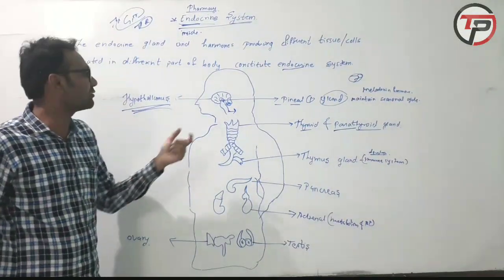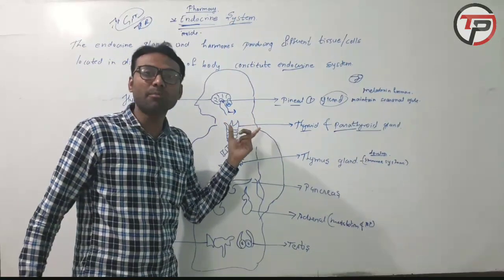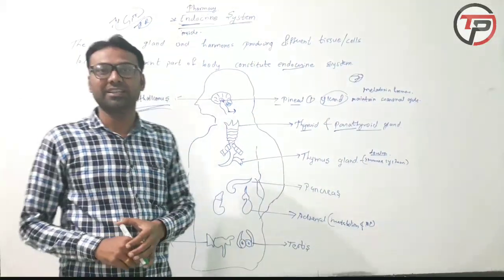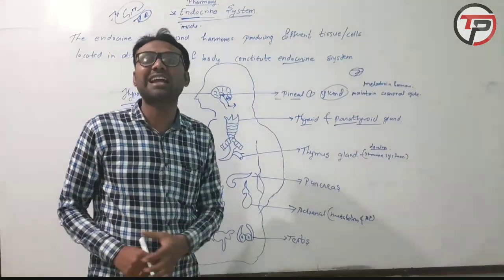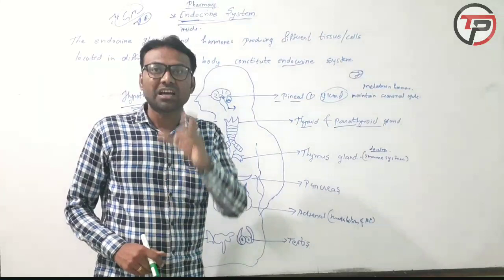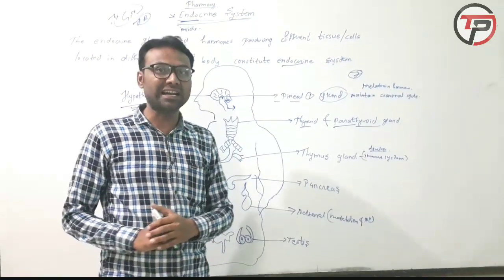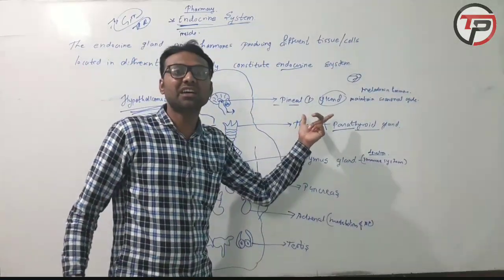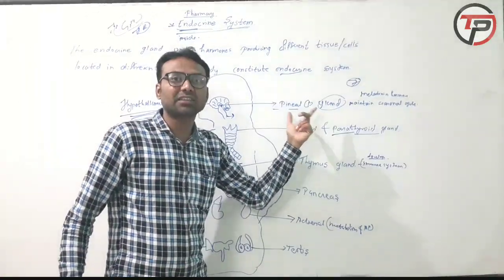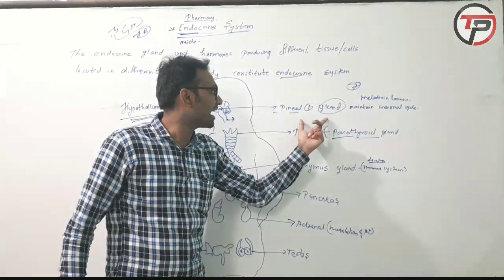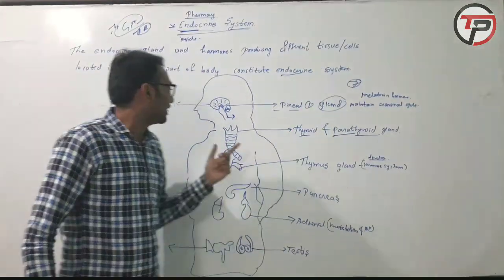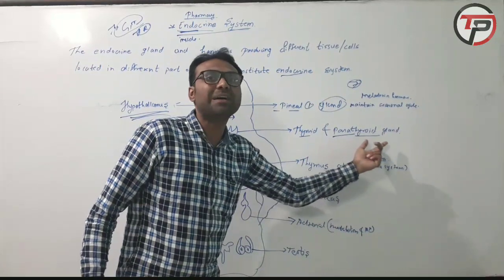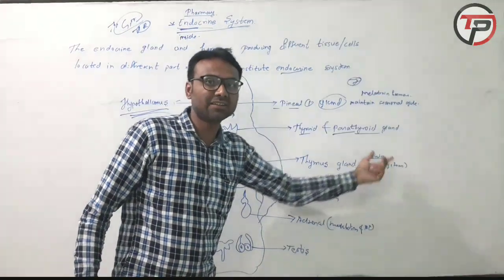Now it is very essential to know how many endocrine glands are there in our body. The first is the pineal gland, next is the thyroid gland and parathyroid gland.